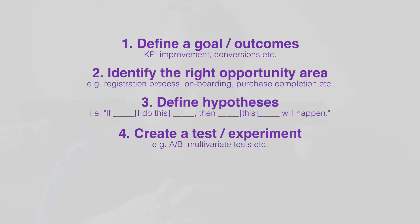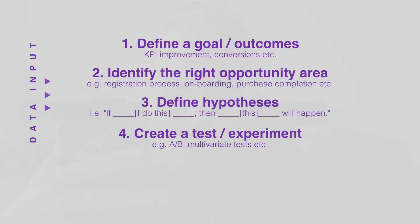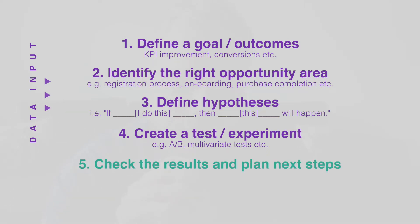Step four is to create a test based on that hypothesis. All four of these steps always involve some data input from what you know so far and what you're going to discover. Step five — the last step — is when you get the data output, check the results, and analyze whether you need to run an additional experiment or whether the experiment was successful and you need to implement and roll out your design features.